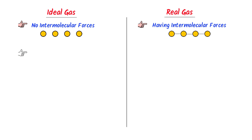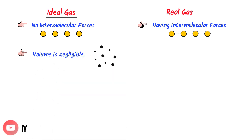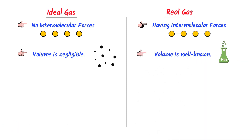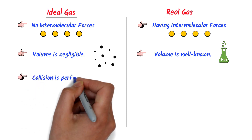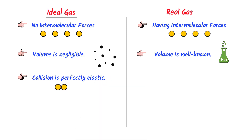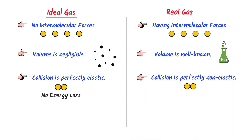Secondly, in ideal gas, the volume of gas is negligible — it means that the gas is not taking up any space. While in real gas, the gas molecules take up some volume in the container. Thirdly, in ideal gas, the collision between gas molecules is perfectly elastic, meaning that when gas molecules collide with each other, no energy is lost. While in real gas, the collision between gas molecules is non-elastic, meaning that when gas molecules collide with each other, they lose energy.